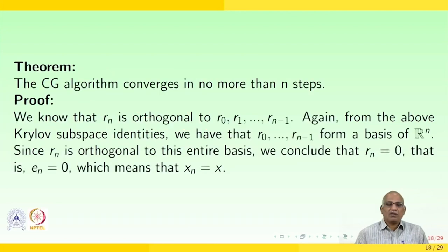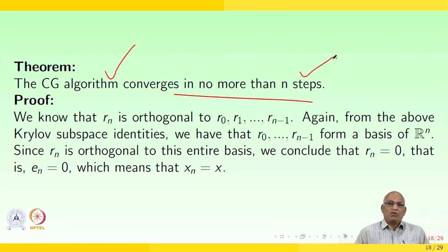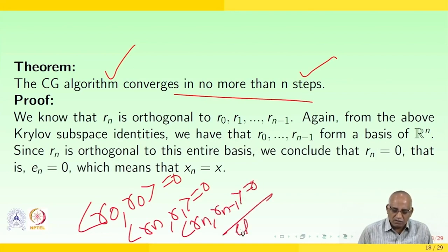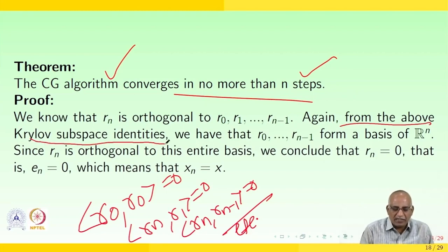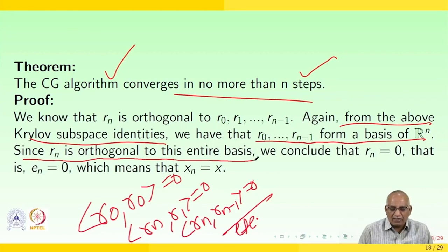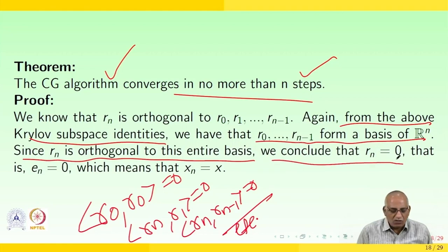The following theorem states that the conjugate gradient algorithm converges in at most n steps. Proof: we know that r_n is orthogonal to r₀, r₁, …, r_{n−1}. From the Krylov subspace identities, r₀, r₁, …, r_{n−1} form a basis of ℝⁿ. Since r_n is orthogonal to this entire basis, we conclude that r_n = 0, that is, the error e_n = 0, which means x_n = x (the exact solution).